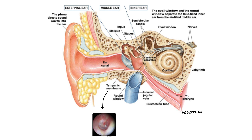The external ear can be further divided into two parts: the auricle or pinna, which is the visible part of the ear, and the external auditory meatus, which is the part of the ear canal lateral to the eardrum or tympanic membrane. The auricle's funnel shape helps to capture and direct sound waves to the eardrum. The auricle is mainly cartilaginous with the exception of the fleshy lobule.